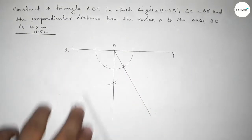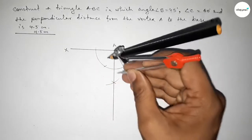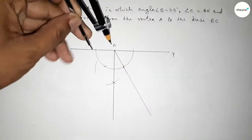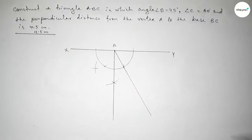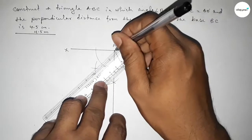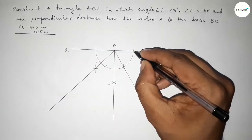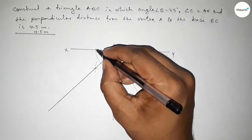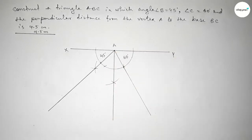Now joining this line to get a 45-degree angle. Putting the compass at a greater than half length and cutting arcs so both curves intersect at a point. Joining this gives a 45-degree angle. This angle up to here is 60 degrees, and this angle up to here is 45 degrees.